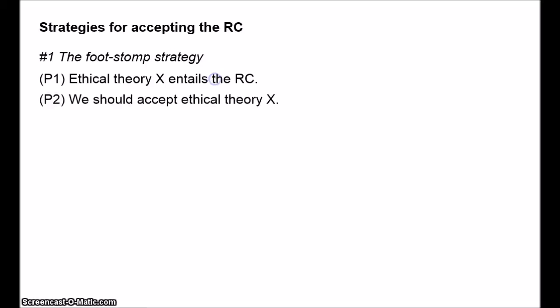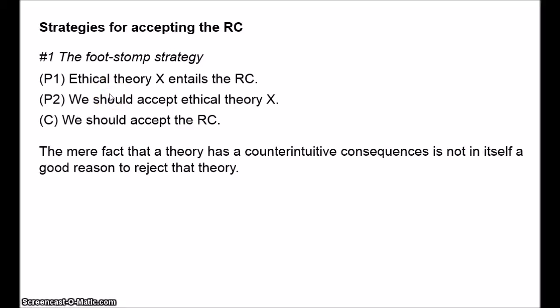One strategy is fairly simple. I call it the footstomp strategy. It's essentially the argument, ethical theory X entails the repugnant conclusion. We should accept ethical theory X. Therefore, we should accept the repugnant conclusion. Ethical theory X might be classical utilitarianism. It accepts the repugnant conclusion, but we should be classical utilitarians, so we should accept the repugnant conclusion. This probably sounds a bit question begging. If somebody's given the repugnant conclusion as a criticism of a particular ethical theory, then wouldn't this just beg the question? But the real point here is, the mere fact that some theory has a counterintuitive consequence is not in itself a good reason to reject that theory.